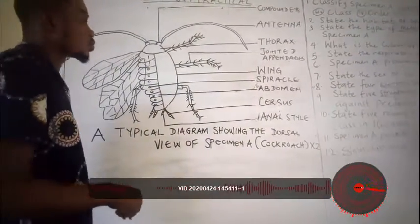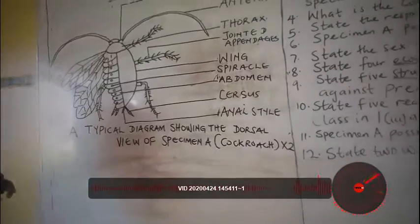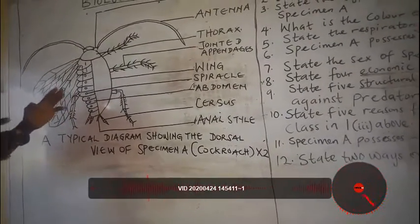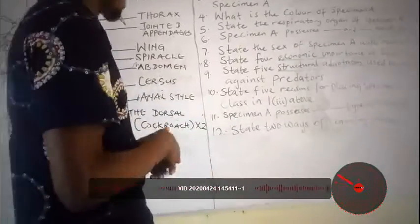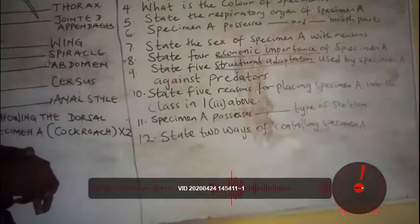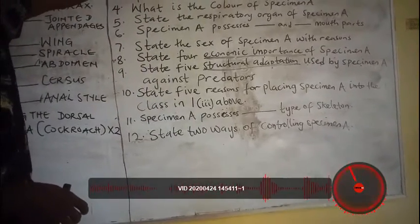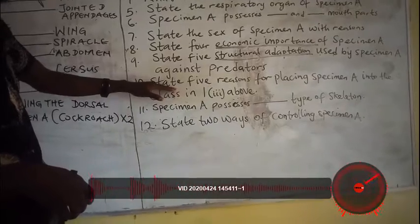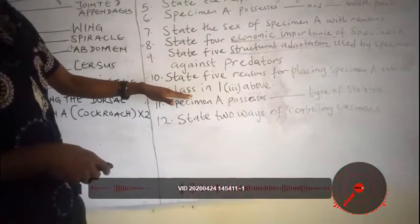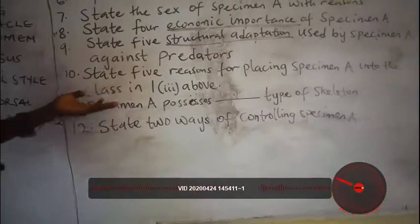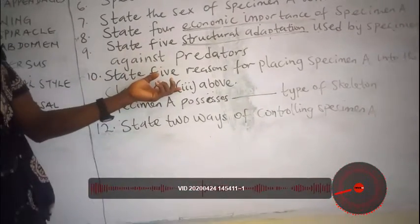The last structural adaptation is that it has a virtually flattened body, which allows it to hide in crevices. Those are the structural adaptations of specimen A against predators. The next question, number ten, asks us to state five reasons for placing specimen A into the class Insecta. The interpretation is: what are the characteristics of insects?